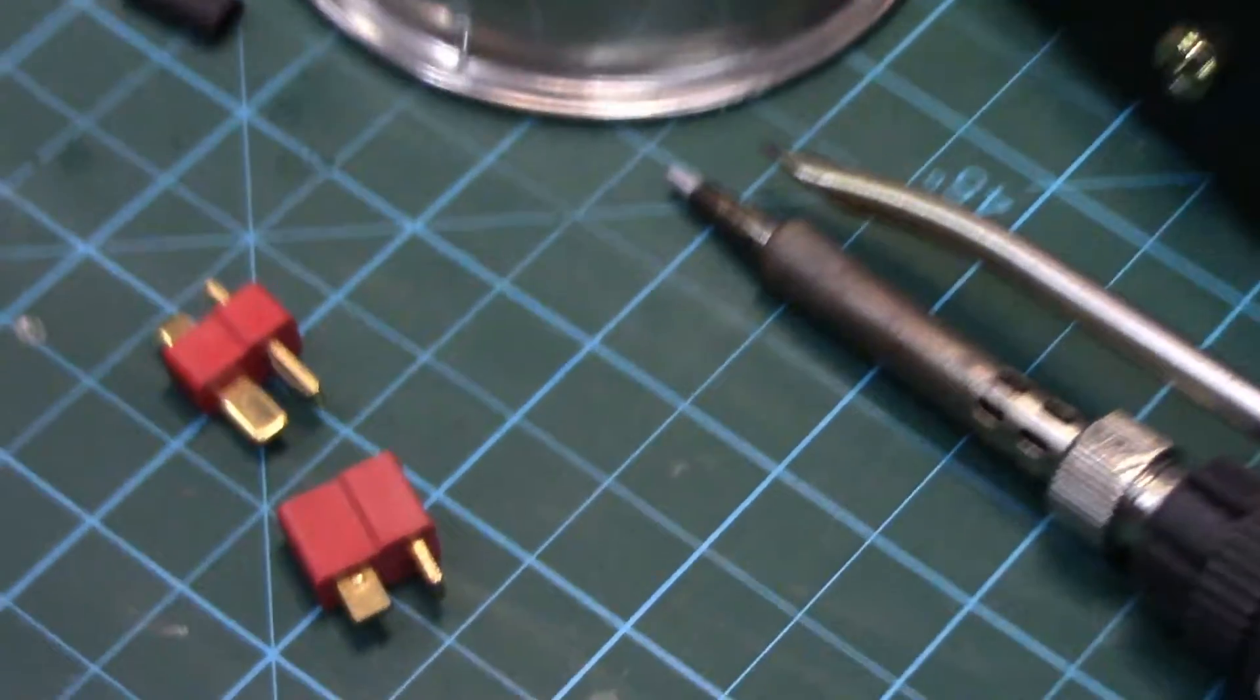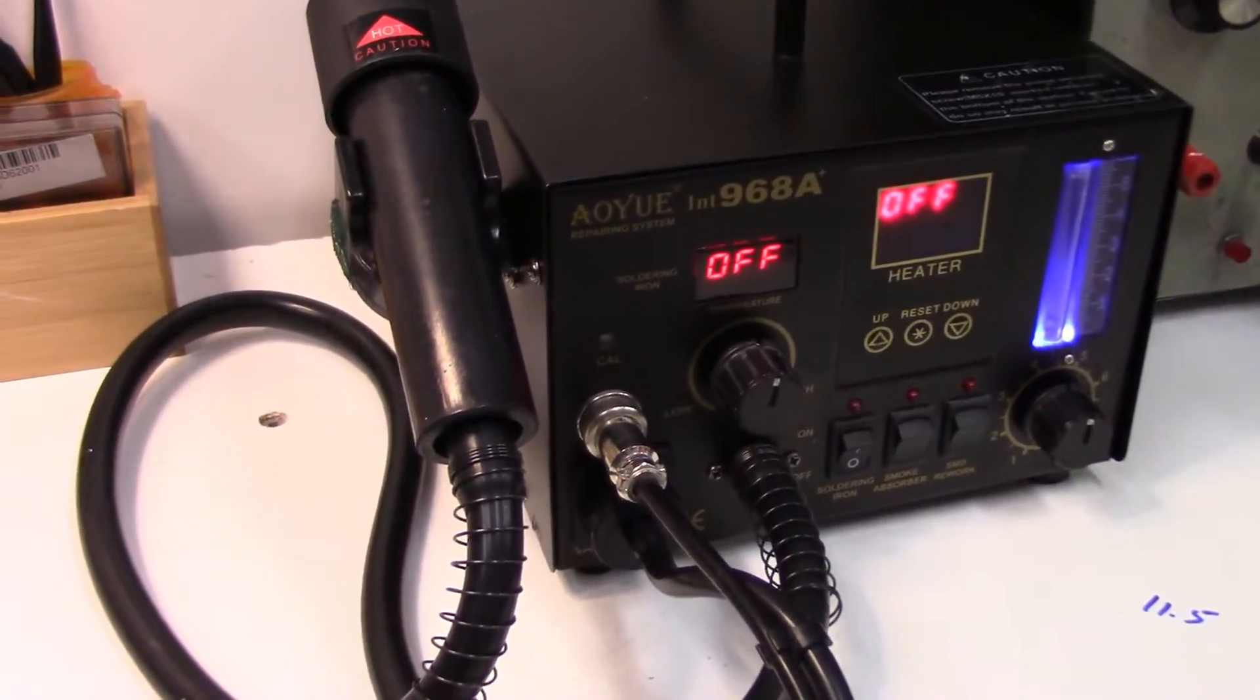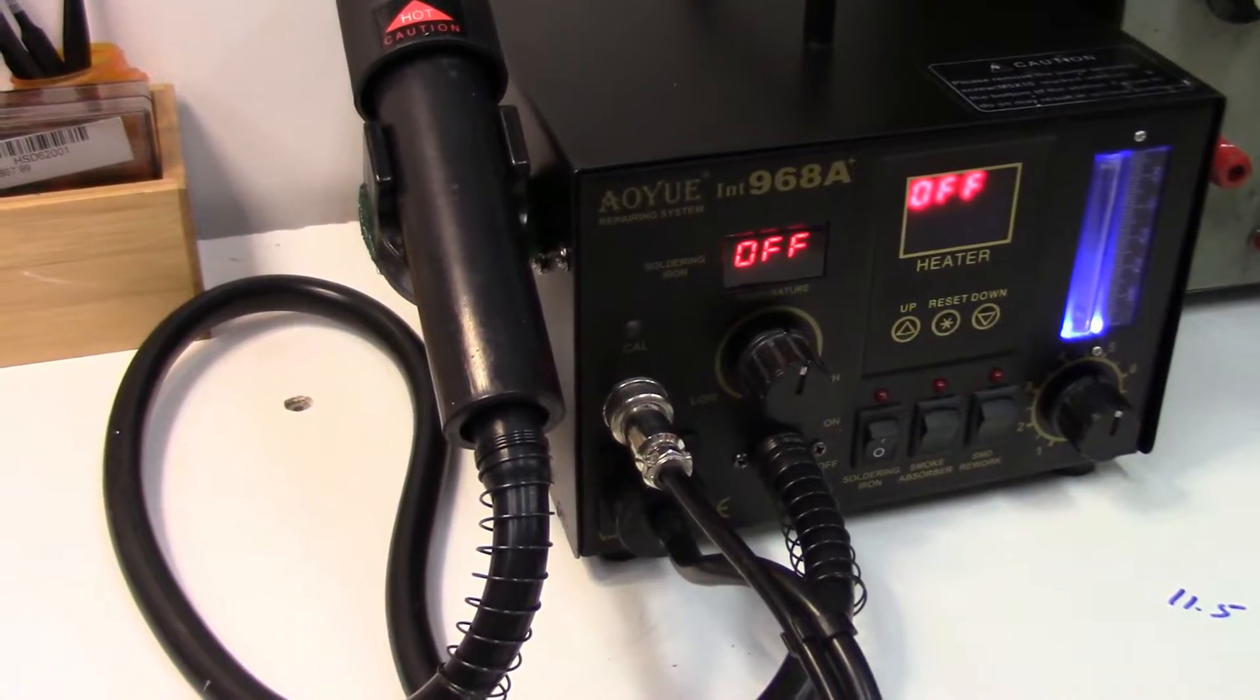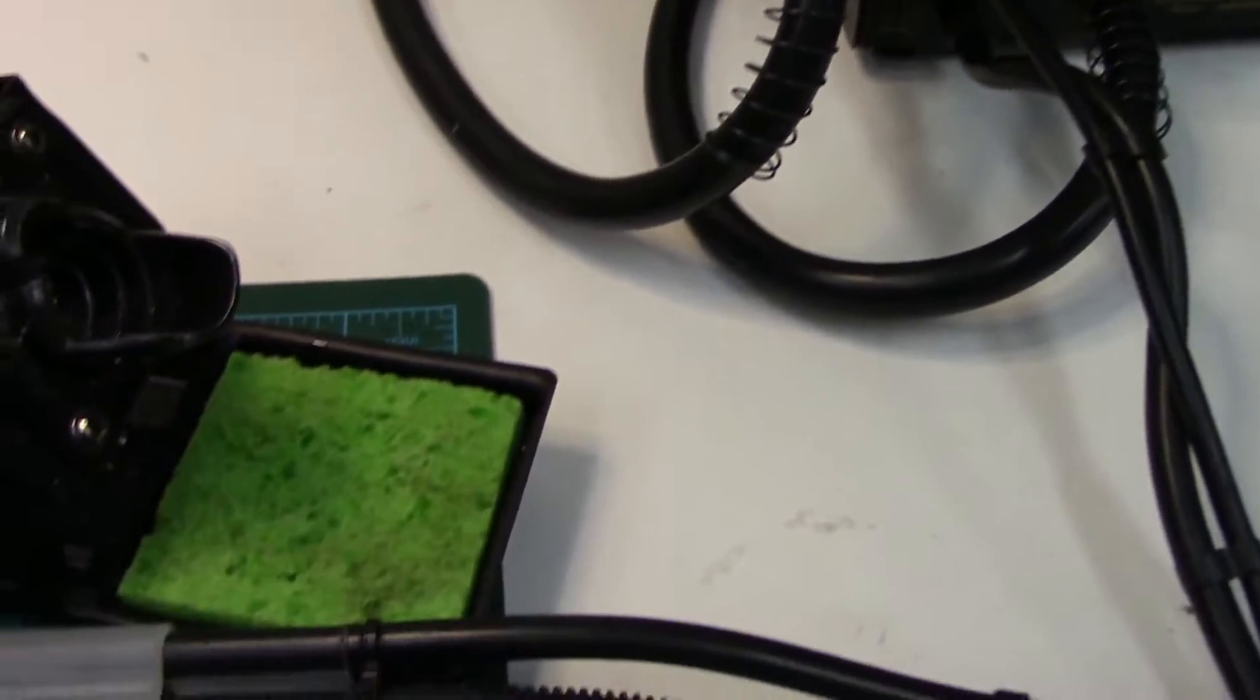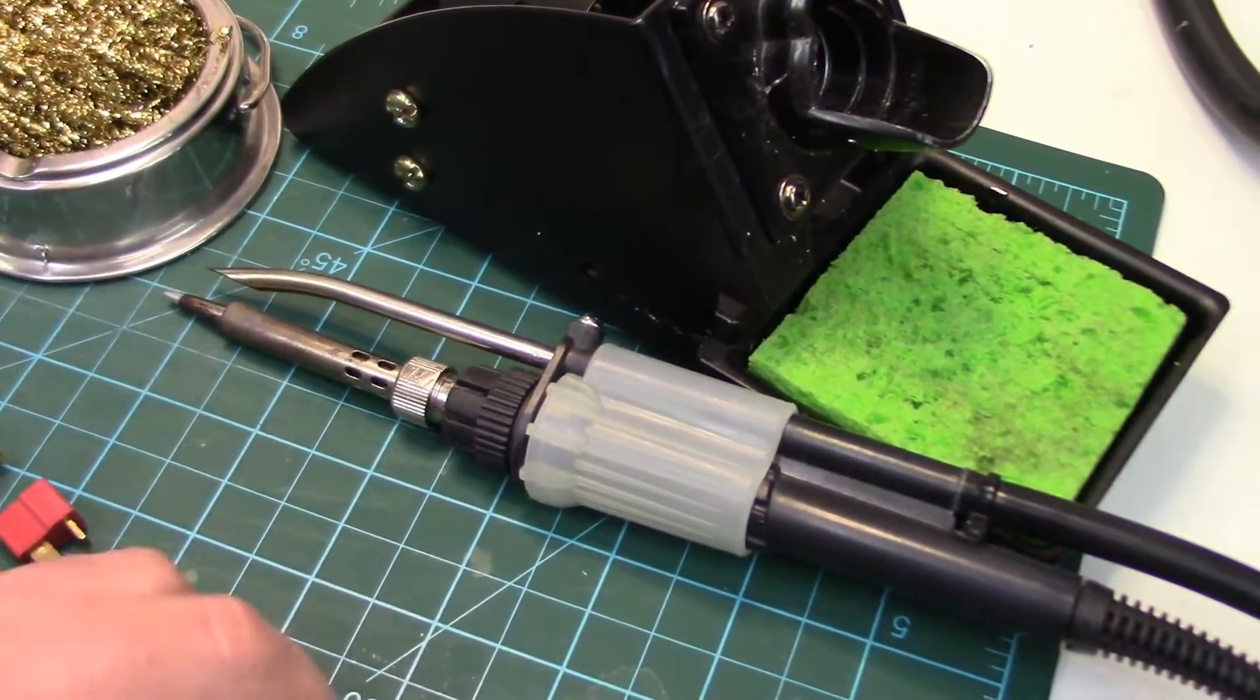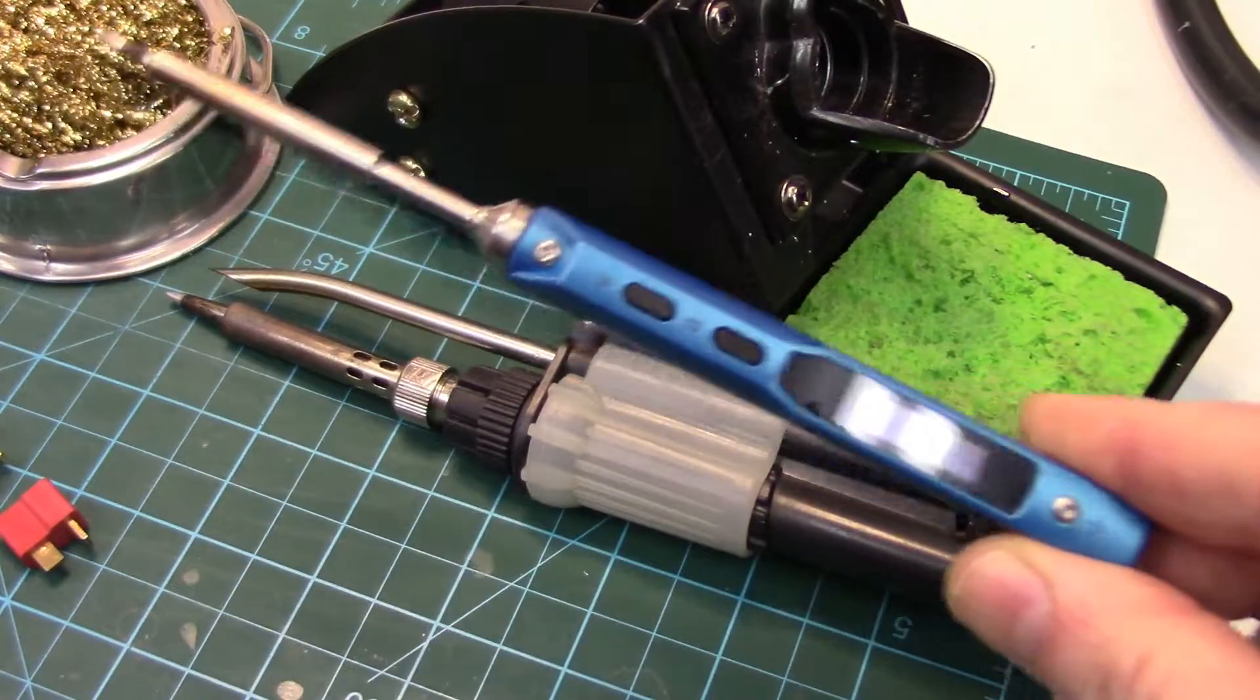As far as soldering equipment goes, I'm just using my AOU968A plus soldering station. This is a hot air rework station as well, it's a combination. Basically any soldering iron that's around 60-70 watts will do you. If you happen to have a TS100 soldering iron that so many in the hobby do have nowadays, these work great.